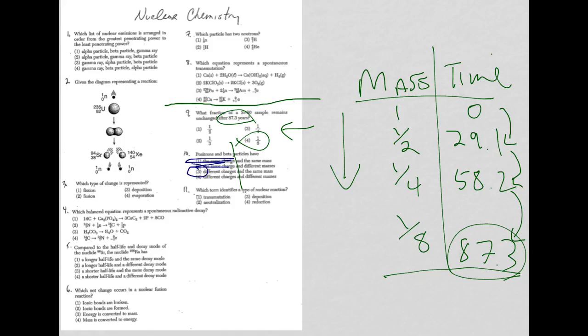Finally, for question 11, which term identifies a type of nuclear reaction? Type of nuclear reaction can be called a transmutation. This is a question that relates back to definitions. That's why your definition list and making sure you know your terms is so important, along with all the other information. Keep working hard and good luck.